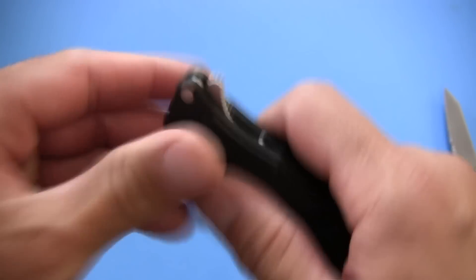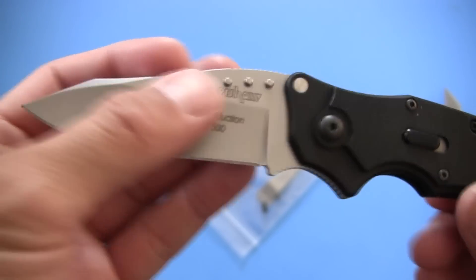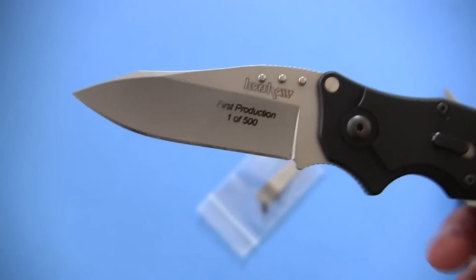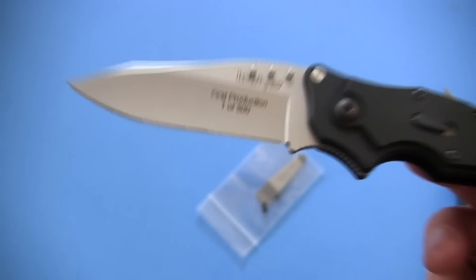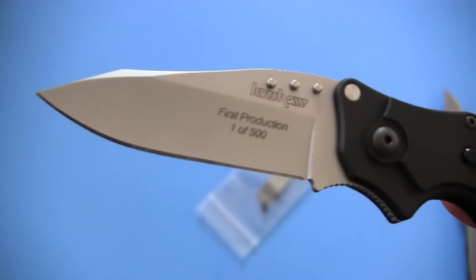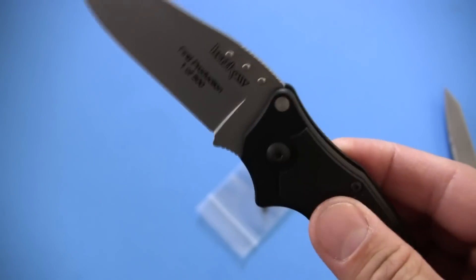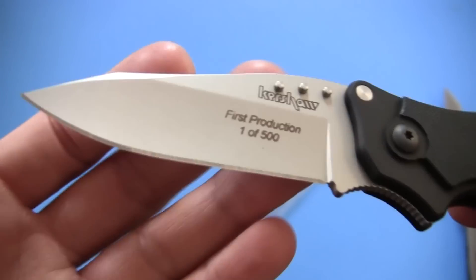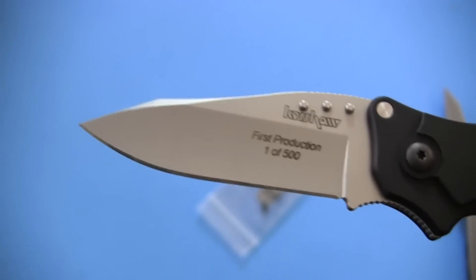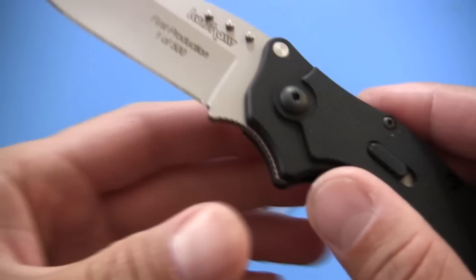This as you might have seen a moment ago is the first production run of this knife and it says one of 500. That does not mean that this was the first one off the line. Every single one of those first 500 first production run Kershaws will say one of 500 because indeed they are all one of 500. If you see that anywhere, don't let someone fool you into thinking that that's the first one.